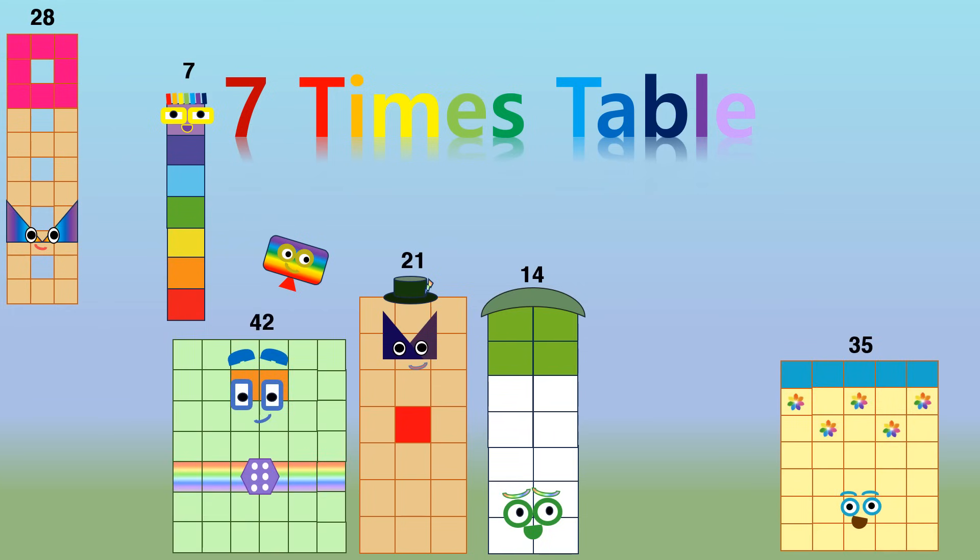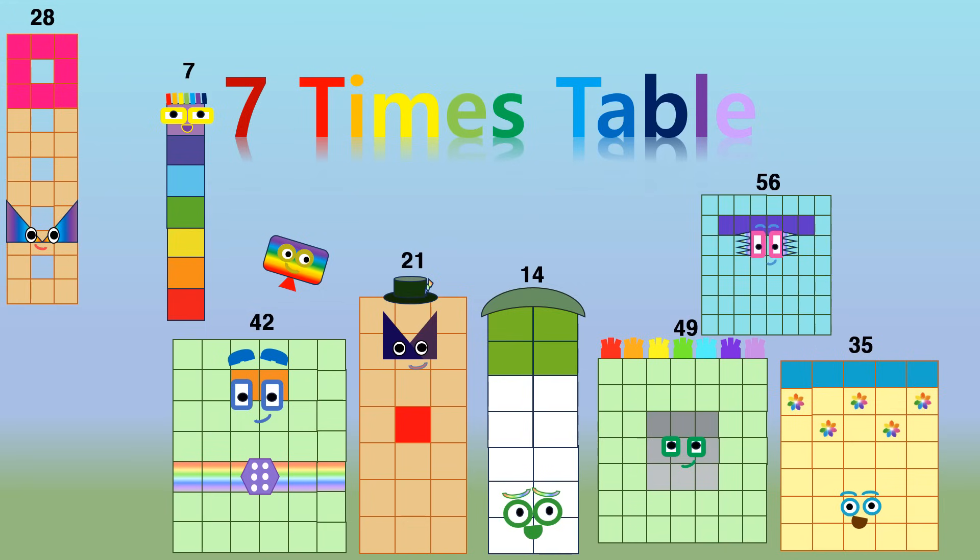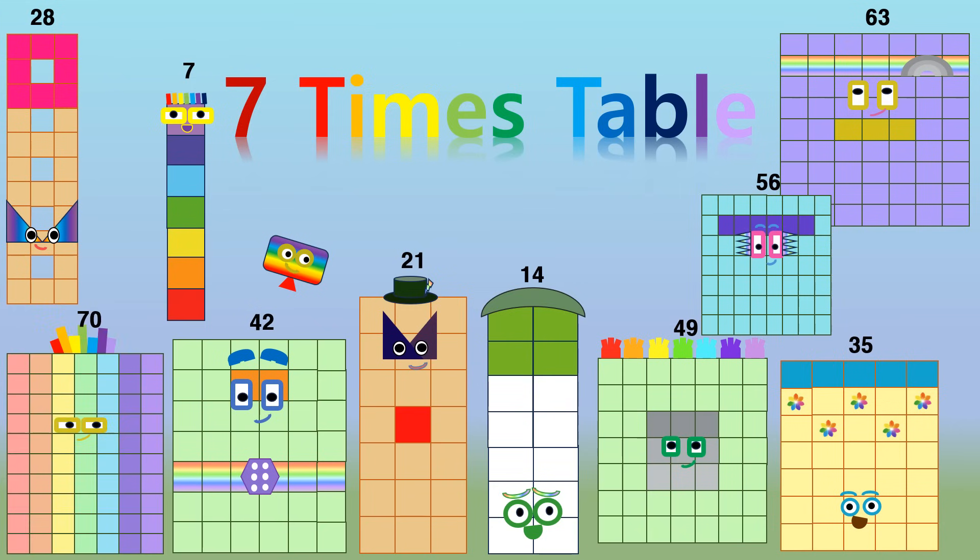6 7s are 42. 7 7s are 49. 8 7s are 56. 9 7s are 63. 10 7s are 70.